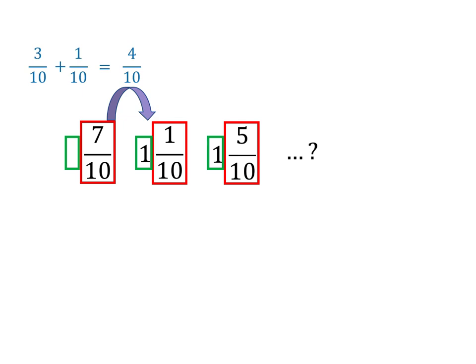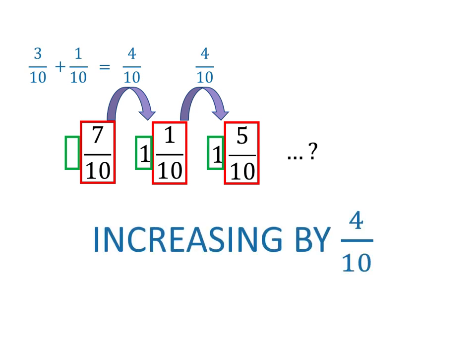Now, how do we get from 1 and 1 tenths to 1 and 5 tenths? This is a little easier because the whole number part isn't changing. We just need to add 4 tenths. Since we've added 4 tenths both times, we can say that the numbers are increasing by 4 tenths.